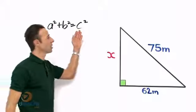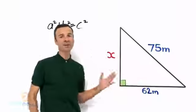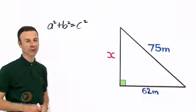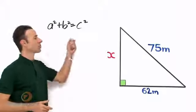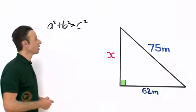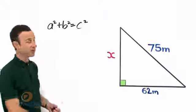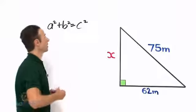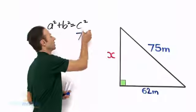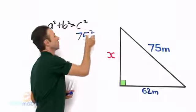Now c squared, here c refers to the hypotenuse. Now in this particular instance it is already given so we can actually put the number in there. So we can just go in and say well that is going to be 75, so let us put that in, all squared.